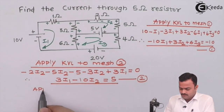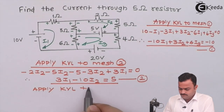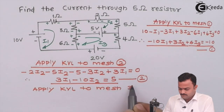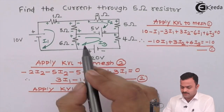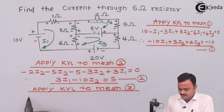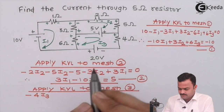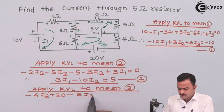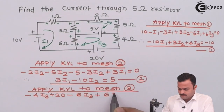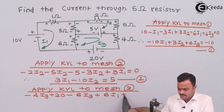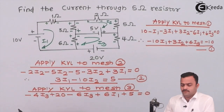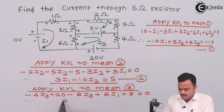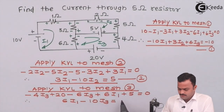Let's apply KVL to mesh three. Starting from the designated point: minus 4·i3, then plus 20 from the voltage source, minus 6·i3, then the shared branch gives plus 6·i1, plus 5 equals zero. Simplifying gives the third equation: 6·i1 minus 10·i3 equals minus 25, as equation number three.